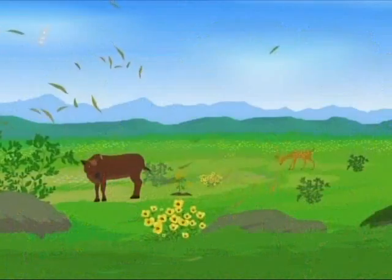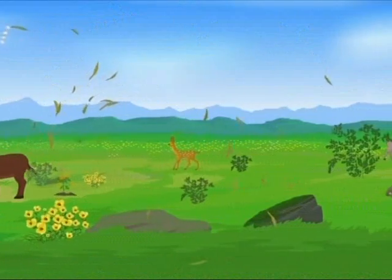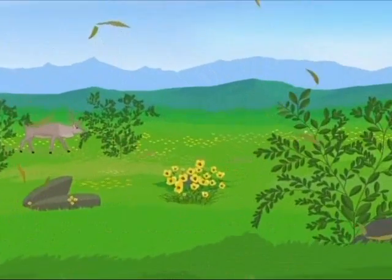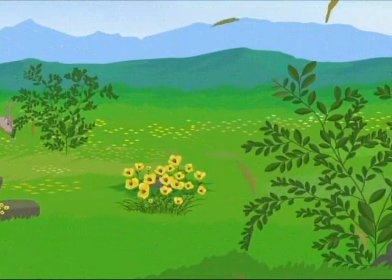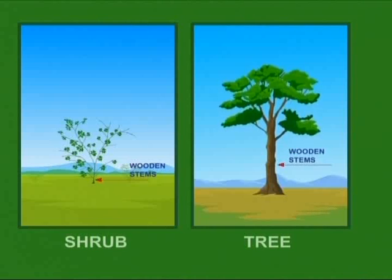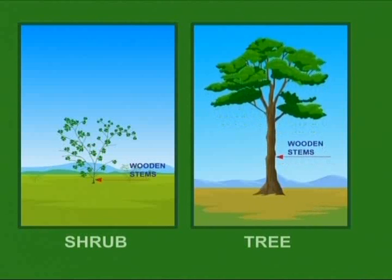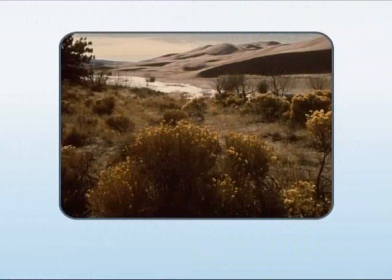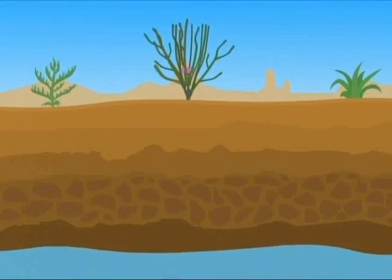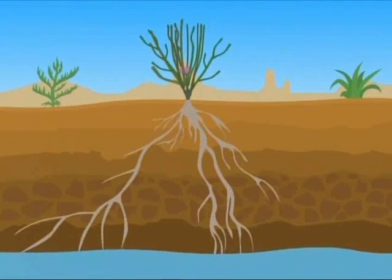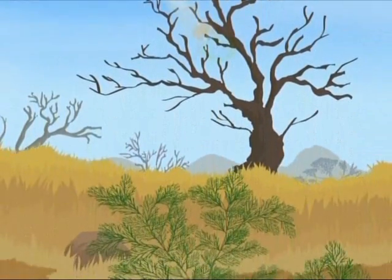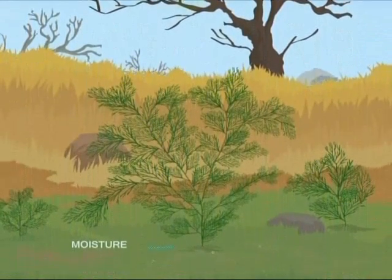Shrublands across the world is a biome that mainly consists of shrubs. Shrubs are tougher than trees and occupy the space in between the plants. Similar to trees, they have wooden stems but do not grow more than a few feet tall. The one thing in common that shrublands across the world have is that they grow in areas where water is scarce for several months every year. The climate here may be too dry for trees to grow, but the moisture here is enough to prevent the land from converting into a desert.